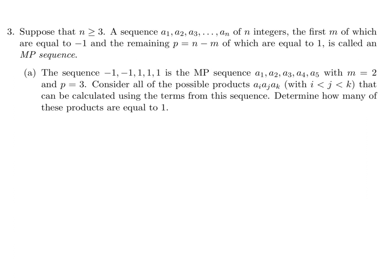Suppose N is greater than or equal to 3. A sequence A1, A2, ..., AN of N integers, the first M of which equal negative 1 and the remaining P (= N minus M) equal to 1, is called the MP sequence. The sequence negative 1, negative 1, 1, 1, 1, 1 is an MP sequence with M = 2 and P = 3. Consider all possible products AI times AJ times AK with I < J < K calculated using terms from the sequence, and determine how many of these products equal 1.